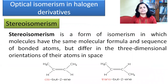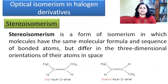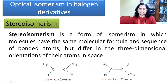First we look at stereoisomers. Stereoisomers represent a form of isomerism in which molecules have the same molecular formula and the same sequence of bonded atoms, but differ in the three-dimensional orientation of their atoms in space. For example, cis-2-butene and trans-2-butene are geometrical isomers of each other. In the cis isomer, similar groups are present on one side of the double bond, while in the trans structure, the two similar groups are on opposite sides of the doubly bonded carbon atom.